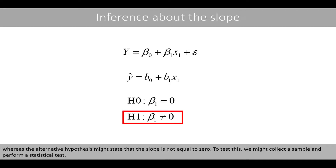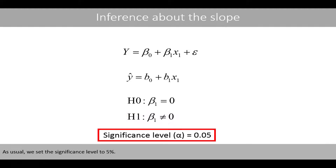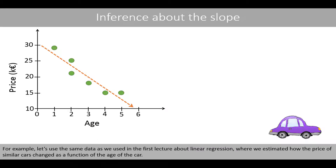To test this, we might collect the sample and perform a statistical test. As usual, we set the significance level to 0.05. For example, let's use the same data as we used in the first lecture about linear regression, where we estimated how the price of similar cars changed as a function of the age of the cars.